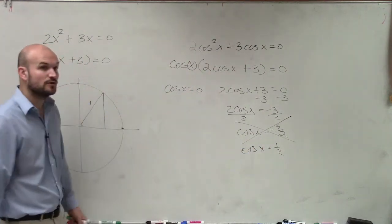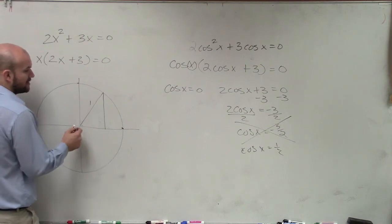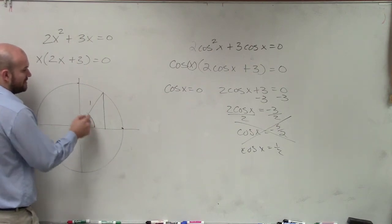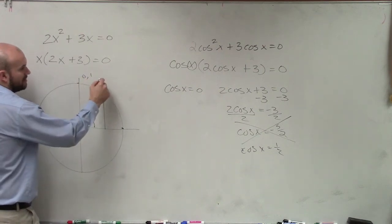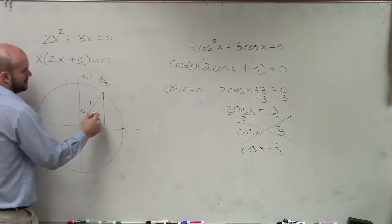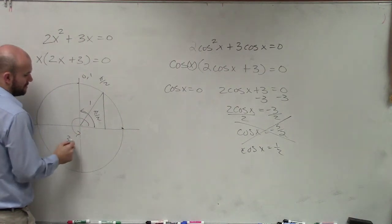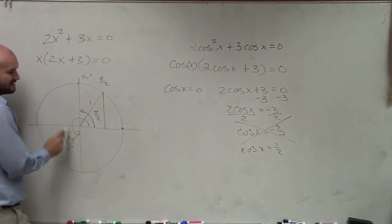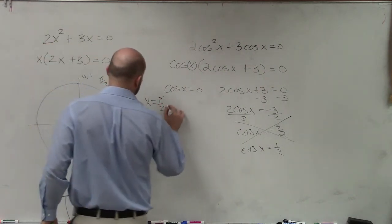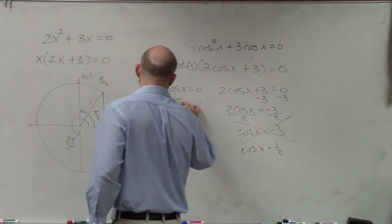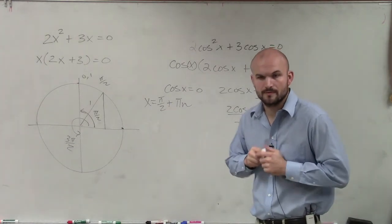However, we can find the value when cosine of x equals 0. Cosine of x equals 0 at the angle corresponding to the point (0, 1), which is pi over 2, and also at 3 pi over 2. Since the distance between those two is pi, I can say x equals pi over 2 plus pi n. And those would be all your solutions.